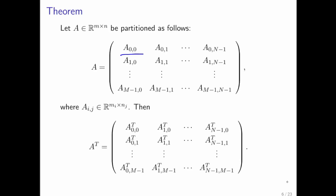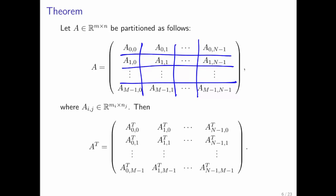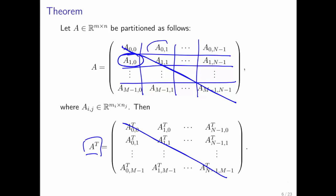If you take matrix A and partition it into submatrices, and you then want to transpose matrix A, each symbol denoting a submatrix of A is moved as if they were scalars and the matrix was being transposed. For example, these two were swapped, but then in addition, each of those matrices themselves must be transposed.